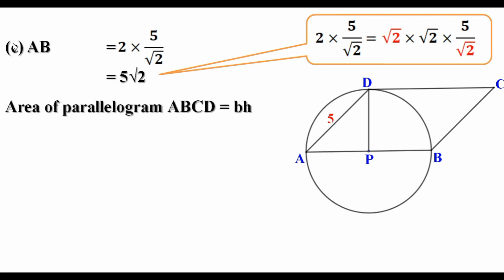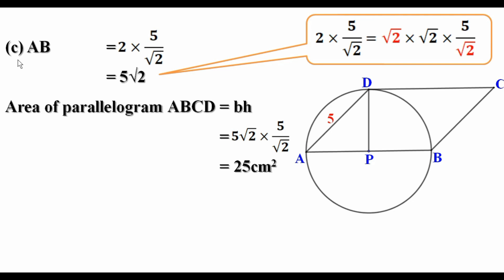Now let us find the area of the parallelogram ABCD, that is equal to B into H, where B is a side and H is the distance from that side to its opposite side. Here AB is a side, so B equal to 5 root 2. And H means PD. We have already found it as 5 by root 2. So area of parallelogram ABCD equal to 5 root 2 into 5 by root 2. Root 2 and root 2 get cancelled and we get 5 into 5, that is equal to 25 centimeter square.